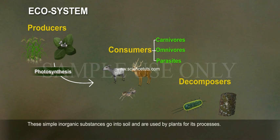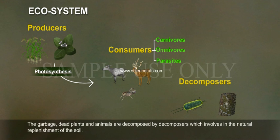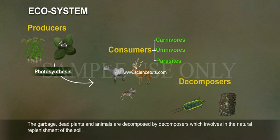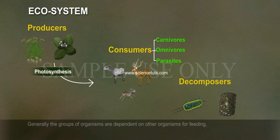These simple inorganic substances go into the soil and are used by plants for their processes. Garbage, dead plants and animals are decomposed by decomposers, which are involved in the natural replenishment of the soil.